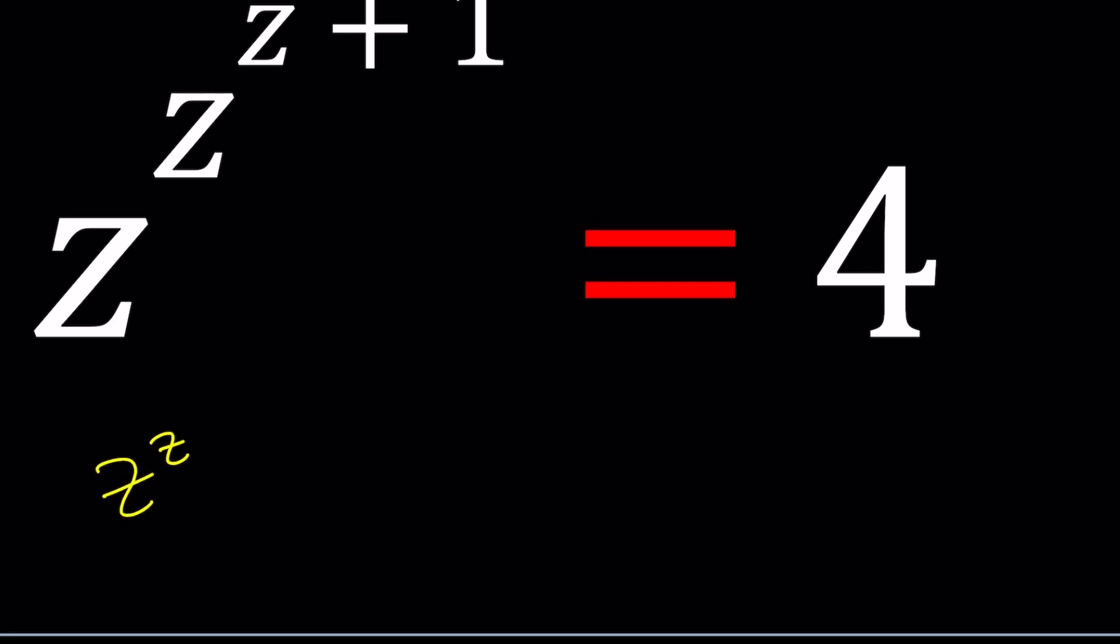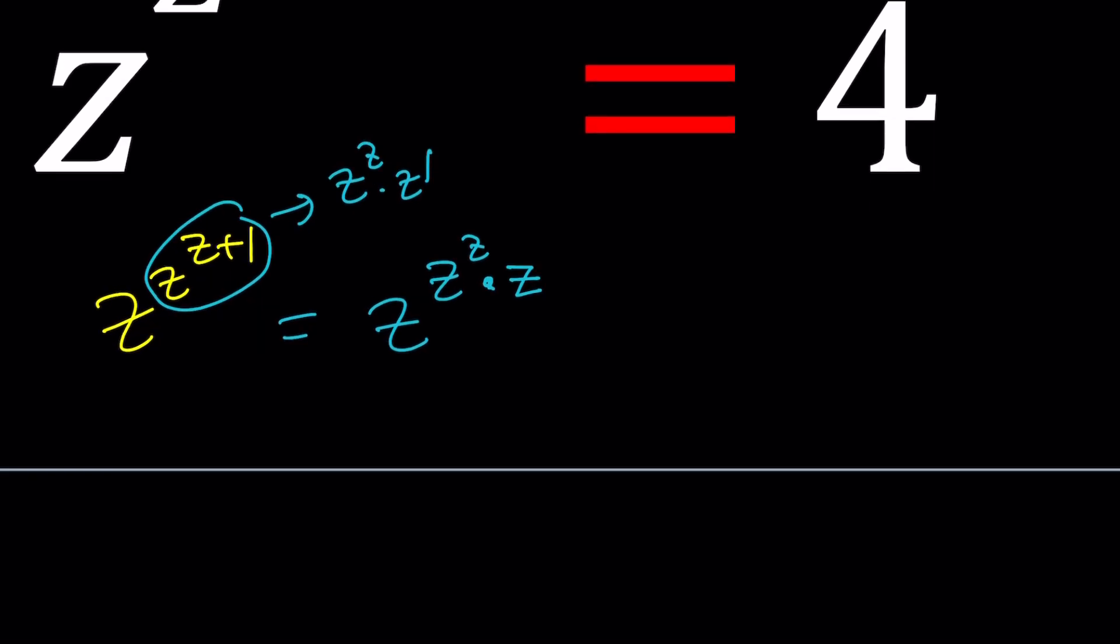Let's go ahead and rewrite it. z to the z to the z plus one. Now I can write z to the z plus one as z to the z times z to the one. So this becomes z to the power z to the z times z. Because when the exponents are multiplied, the superpower property, I can switch the exponents and write it as z to the z and then to the power z to the z because that's when the exponents are multiplied again. But guess what? This is nice.